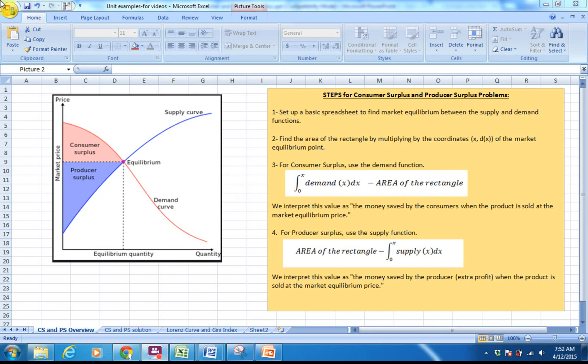The next thing we're going to look at is producer surplus. For producer surplus, we're going to use the supply function. Remember, we're trying to find the area in the blue. So what we're going to do is take the area of the rectangle, but this time it's above the area that we need, and subtract from zero to x that antiderivative of the supply function in terms of x. We interpret this value as the money saved by the producer, or perhaps the extra profit, when the product is sold at the market equilibrium price.